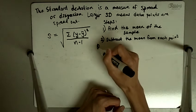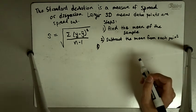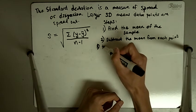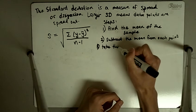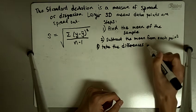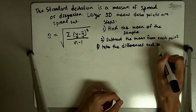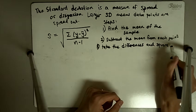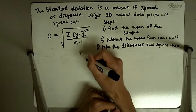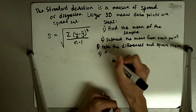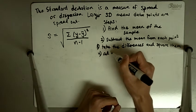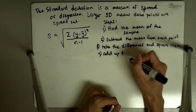The third step is take those differences, whatever differences you found, you square them. The fourth step is take those squared numbers and add all of them up.